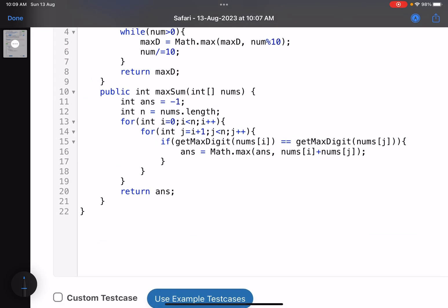So I initialize my answer with minus one, because if there is no pair I have to return minus one. This is the number of elements that I have. Now start traversing—a nested loop. i goes from zero to n and j goes from i plus one to n.